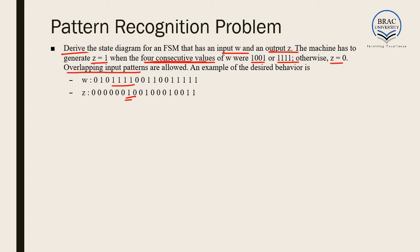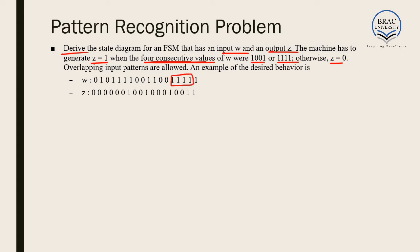Another important term: overlapping input patterns are allowed. This output is generated because of 1 1 1 1 1 present here, and this one is generated because of 1 0 0 1 present here. The 1 present here is overlapping for both. So a single or multiple digits can affect the output. As a result, these three ones are overlapping, and the same sequence in the input can affect the output multiple times. This is called overlapping input patterns.